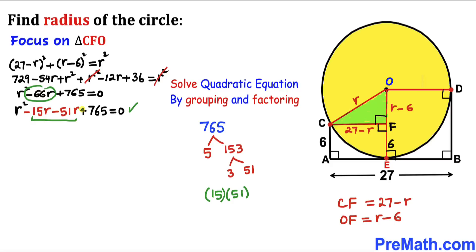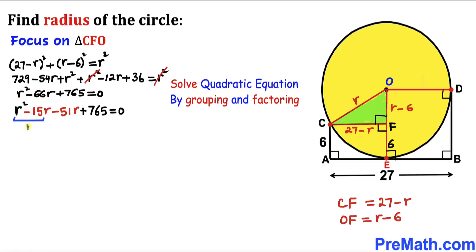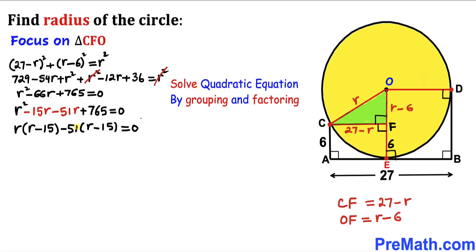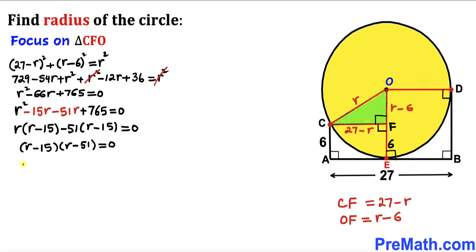Replacing −66r with −15r − 51r, we have r² − 15r − 51r + 765 = 0. From the first two terms, r is common, giving r(r − 15). From the last two terms, −51 is common, giving −51(r − 15). Factoring out (r − 15): (r − 15)(r − 51) = 0. Setting each factor to zero: r − 15 = 0 or r − 51 = 0.